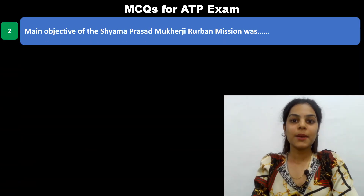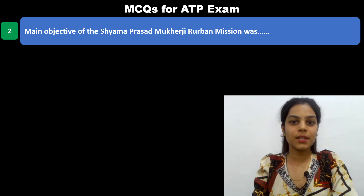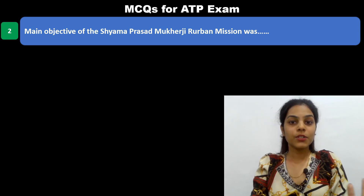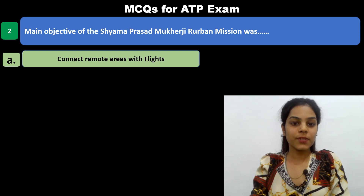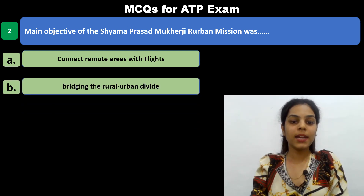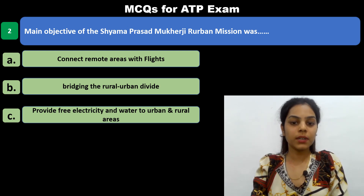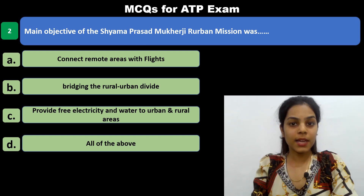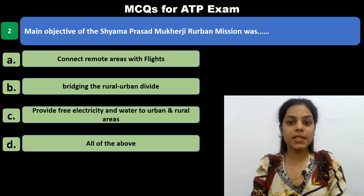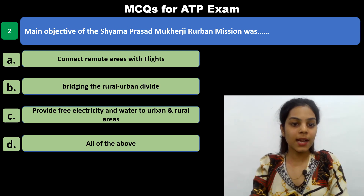Second MCQ: Main objective of Shama Prasad Mukherjee Re-Urban Mission was? Options are: connect remote areas with flights; bridging the rural and urban divide; provide free electricity and water to urban and rural areas; and all of the above. Logically, Re-Urban means rural plus urban, so the answer is option 2 — bridging the urban and rural divide.